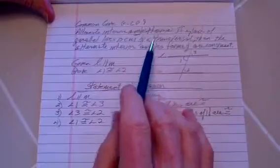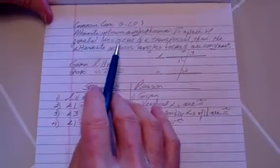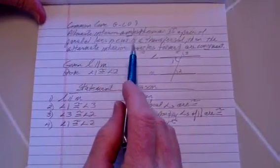Today we are going to prove the Alternate Interior Angles Theorem. That is part of the common core objectives. First, what is the theorem? The theorem states if a pair of parallel lines is cut by a transversal, then the alternate interior angles formed are congruent.